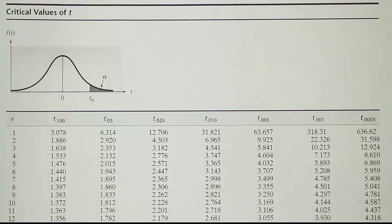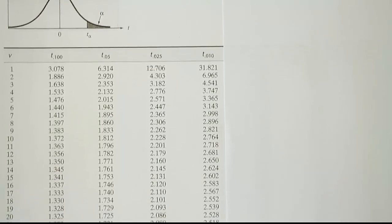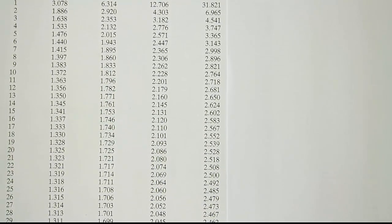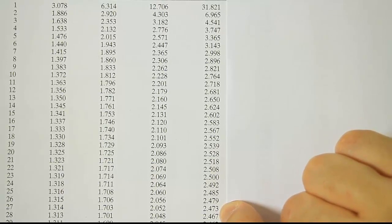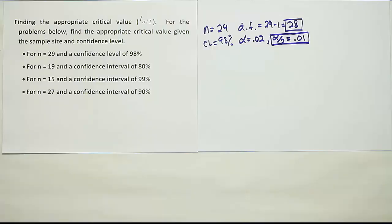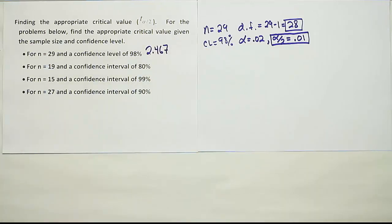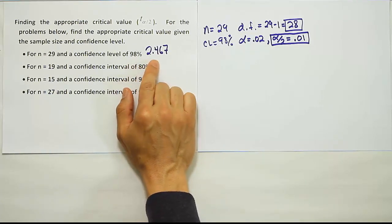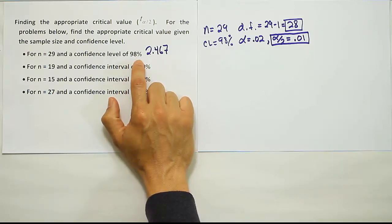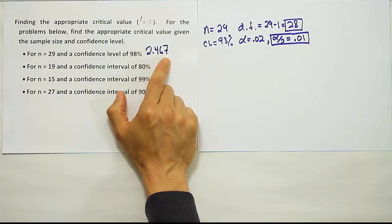We're looking up 0.01 and 28 degrees of freedom. The 0.01 column is found here, and scrolling down to 28 degrees of freedom gives us 2.467. As a check: whenever you get your T answer, make sure it is larger than the corresponding Z value, because T values are always larger. For 98%, the critical Z alpha divided by two value is 2.326, and 2.467 is a little larger — that's how it should be.